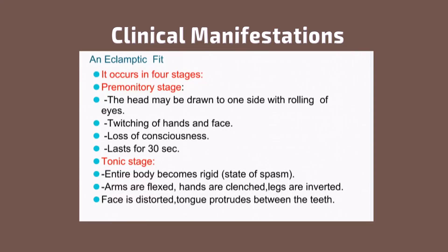The main clinical manifestation of eclampsia is the eclamptic fit, which occurs in four stages. The first is the premonitory stage, where the head may be drawn to one side with rolling of the eyes, twitching of the hands and face, and loss of consciousness, lasting around 30 seconds. The second stage is the tonic stage, where the entire body becomes rigid, arms are flexed, hands are clenched, and legs are inverted.